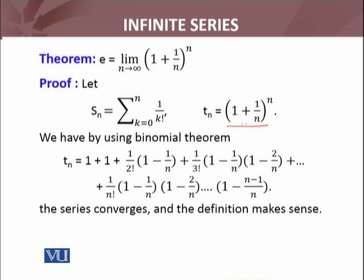By using the binomial theorem, we can expand t_n. Recall that (1 + x)^n expands as: 1 + nx + n(n−1)/2! · x² + ... and so on, with the last term being n(n−1)···(n−(n−1)) · x^n. Applying this binomial theorem expansion to t_n with x = 1/n.